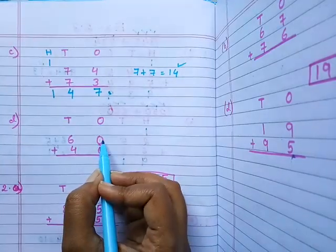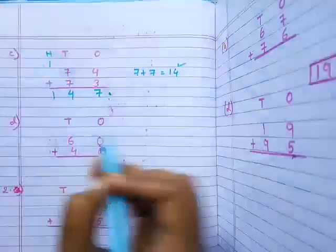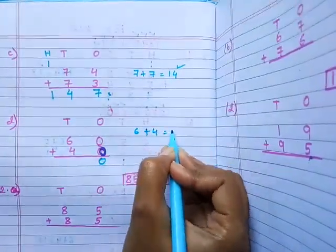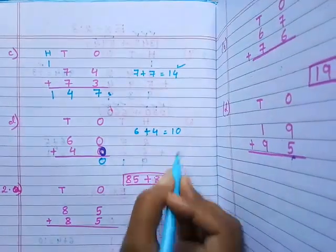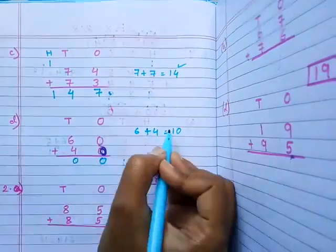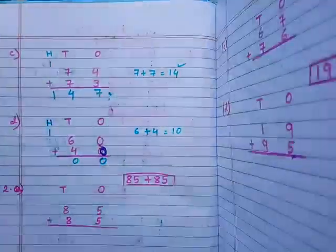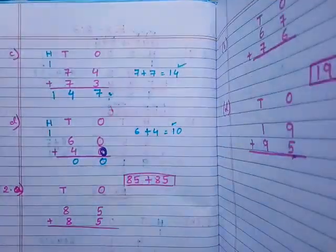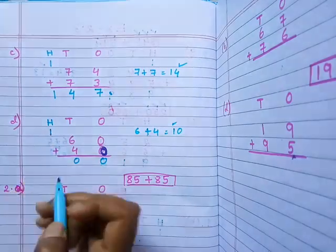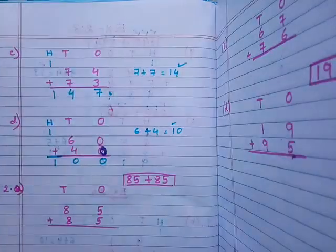Next question, question number d: in 1's place, 0 plus 0 equals 0. In 10's place, 6 plus 4 equals 10. Write down 0 in 10's place, then carry 1 to 100's place. In 100's place only 1 is here, so write down 1. So 100 is our answer.